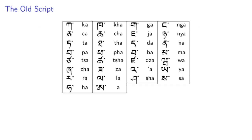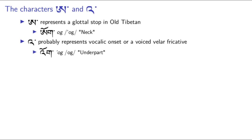A few characters require some special mention. First, the series of stops written with C are actually the palatal stops, cha. The two characters which require extra special mention are A and A. The truth is, there are disagreements about what these were in Old Tibetan.